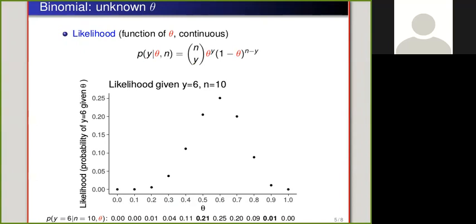I've bolded here, you may remember when theta was 0.5, probability that y equals 6 is 0.21, and when theta is 0.9, probability that y equals 6 is 0.01. So these are still the probabilities for y being equal to 6, but for different theta values.